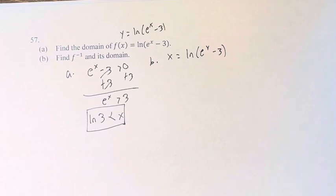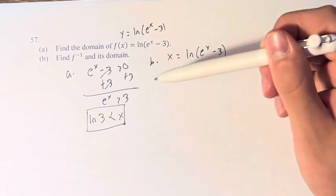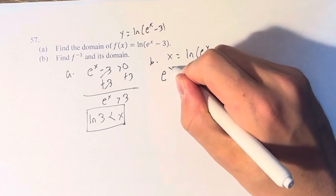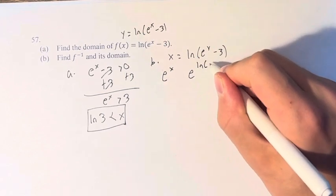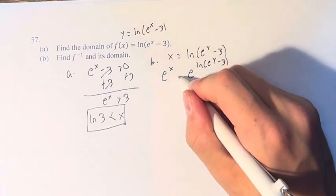The easiest way that we can solve this is to take e and raise e to the power of both sides. If that makes sense. So we have e^x and e to everything on the other side, the ln of e^y minus 3. These are equal.